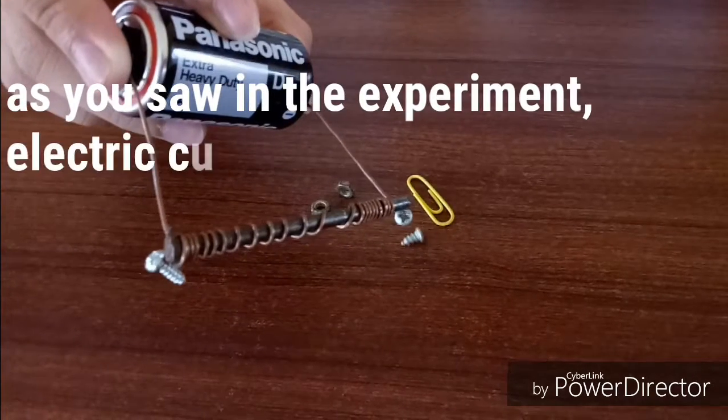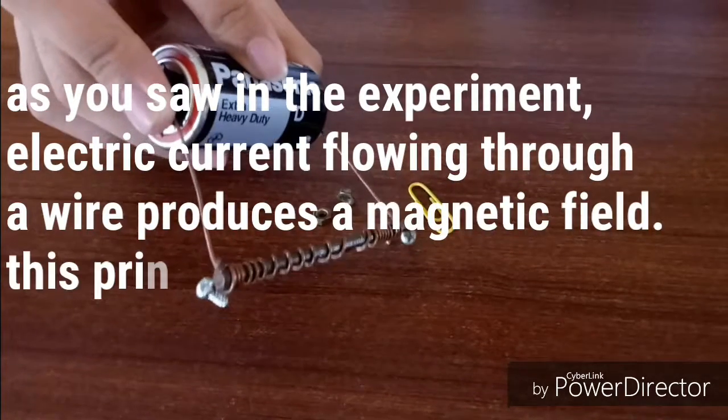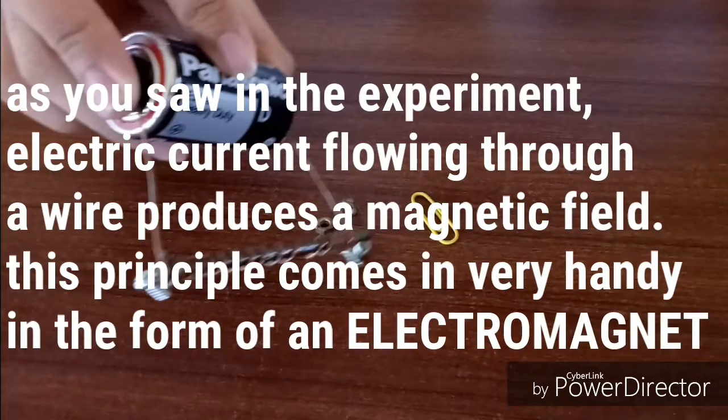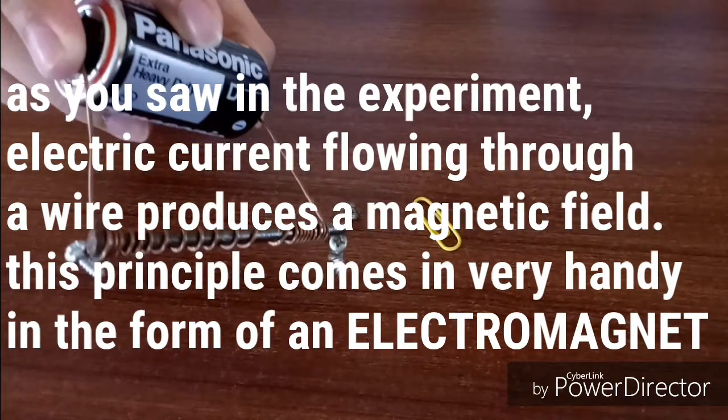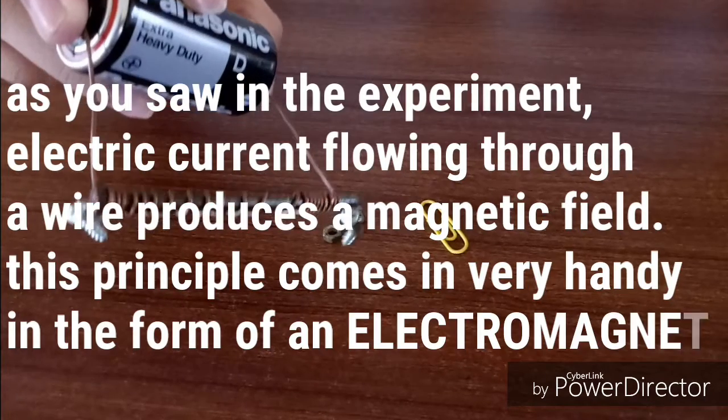As you saw in the experiment, electric current flowing through a wire produces a magnetic field. This principle comes in very handy in the form of an electromagnet.